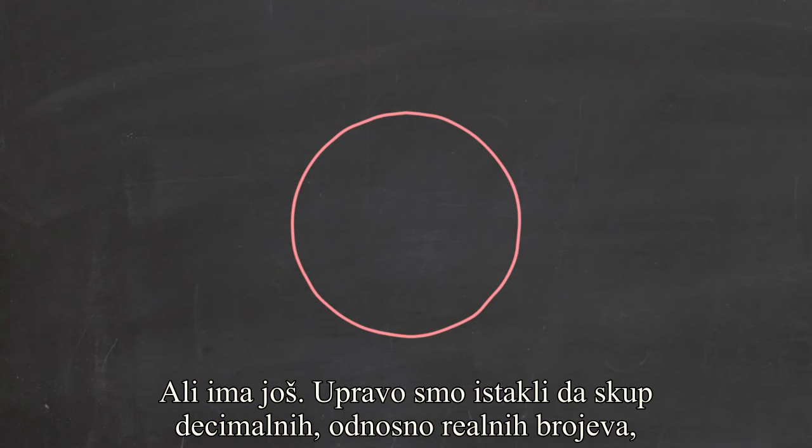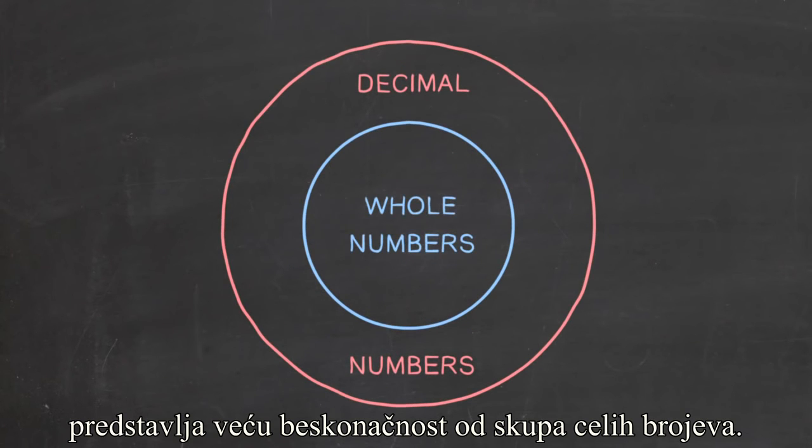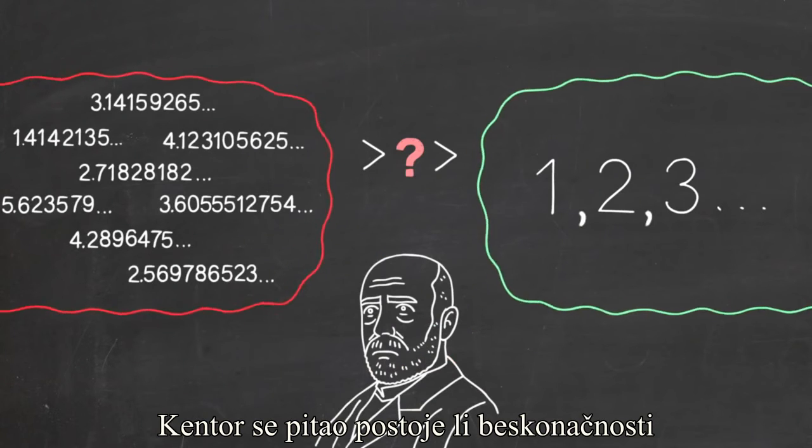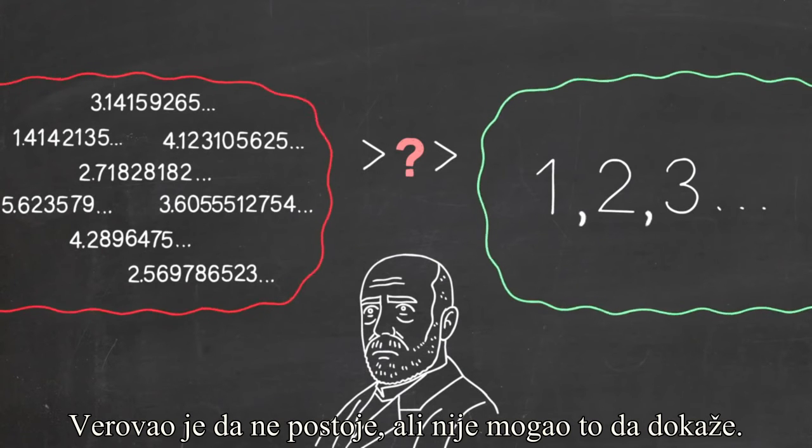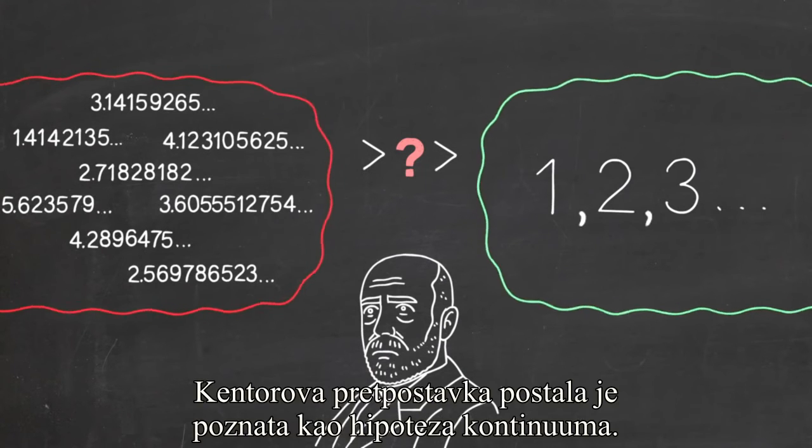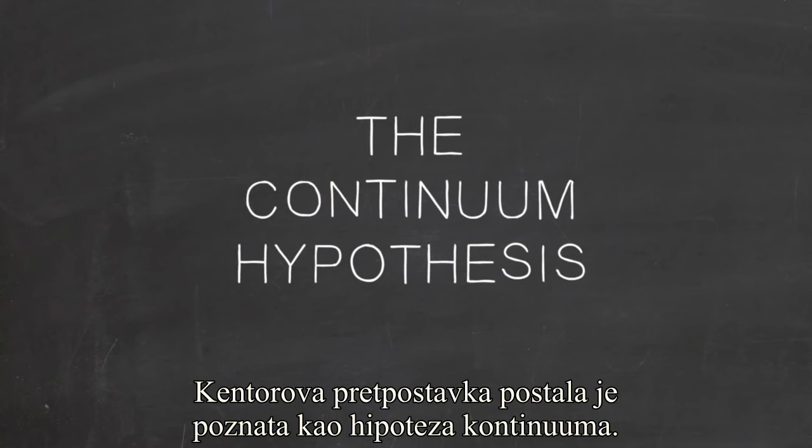There's more. We just pointed out that the set of decimal numbers, that is, the real numbers, is a bigger infinity than the set of whole numbers. Cantor wondered whether there are infinities of different sizes between these two infinities. He didn't believe there were, but couldn't prove it. Cantor's conjecture became known as the continuum hypothesis.